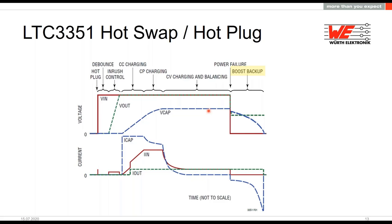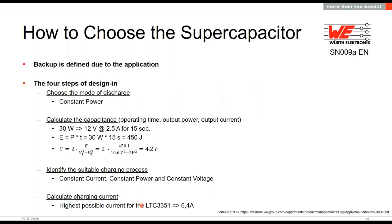While fully charged, the IC can also measure the ESR and capacitance. Now let's talk about how to choose the supercapacitors for this application. A good tool is our support note SN009, which describes a few steps to consider. First, define the mode of discharge — here it is constant power. Then calculate the needed capacitance: we want to supply an application for 50 seconds with 30W, so we need 450 joules. With the supercapacitor bank parameters and the IC cutoff voltage of 2V, we calculate 4.2 farad.